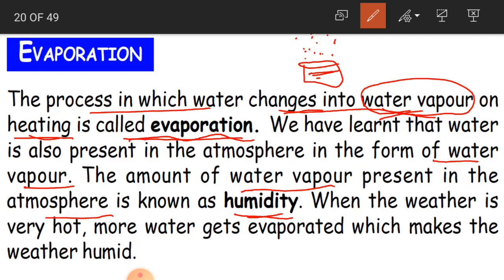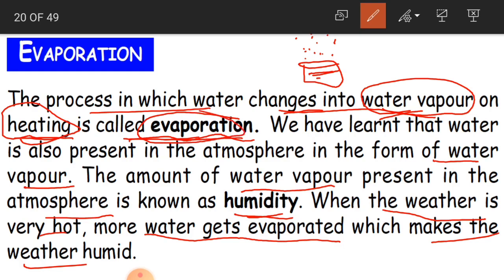When the weather is very hot, more water gets evaporated, which makes the weather humid. On a sunny summer day, the sun heats the water and it evaporates. We already learned that on heating, water evaporates in the form of water vapor. So when it is very hot, more water gets evaporated and more water vapor exists in the air, making the weather hot and humid.